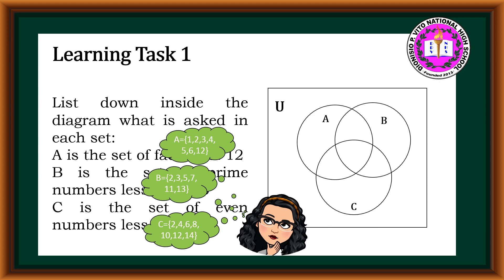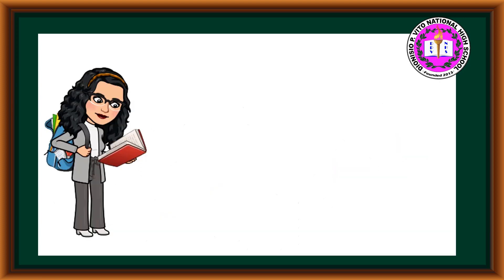Therefore, we have our Venn Diagram. Set A is equal to 1, 2, 3, 4, 5, 6, and 12. Set B is equal to 2, 3, 5, 7, 11, and 13. And last but not least, Set C is equal to 2, 4, 6, 8, 10, 12, and 14. Moving on to our discussion, we have Venn Diagram.